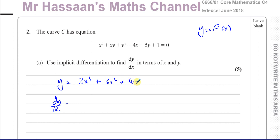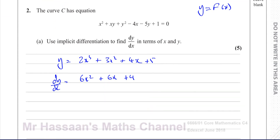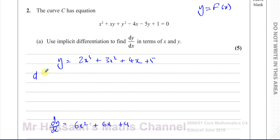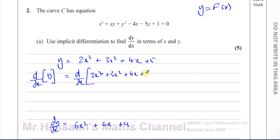What we don't normally write down is that we're differentiating one side of the equation with respect to x, and also differentiating the whole of the other side with respect to x — for example, 2x³ + 3x² + 4x + 5. That's what we're actually doing: the same operation on both sides.